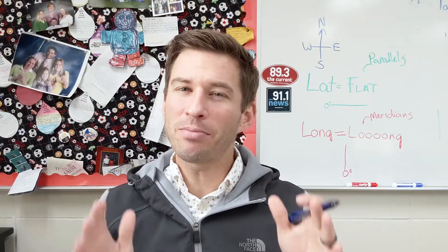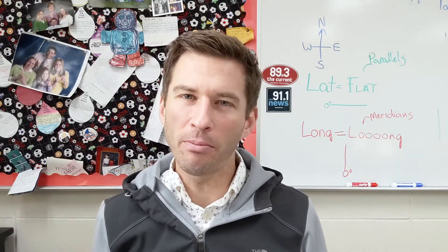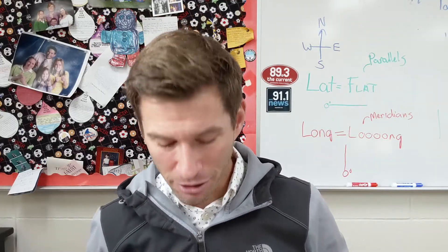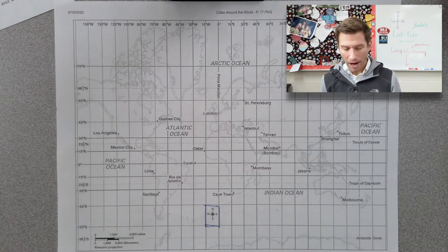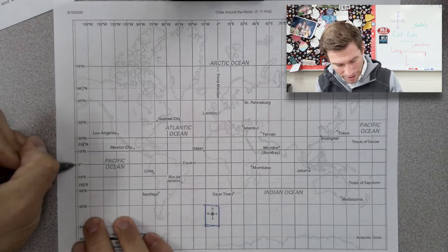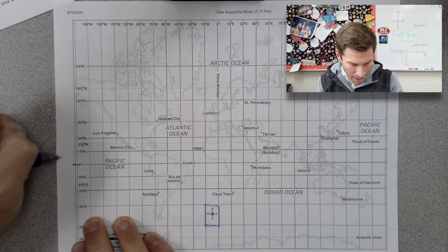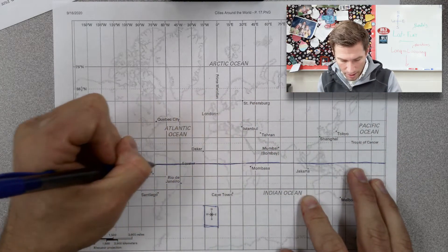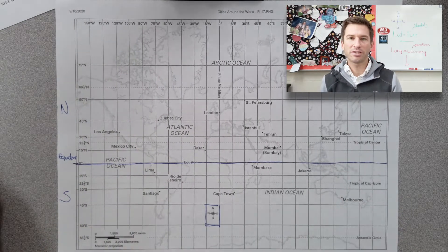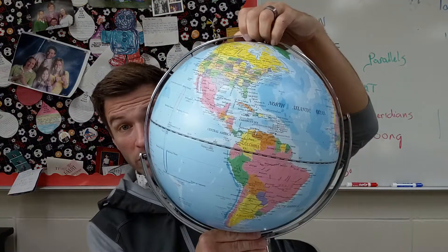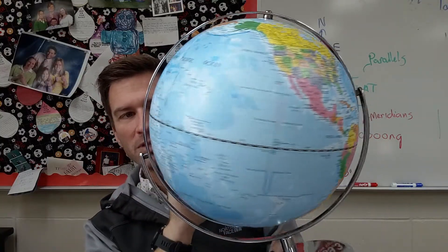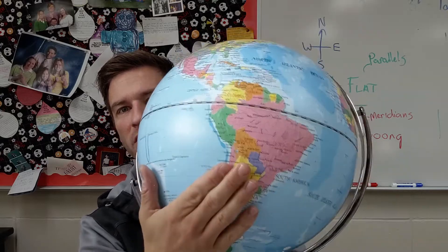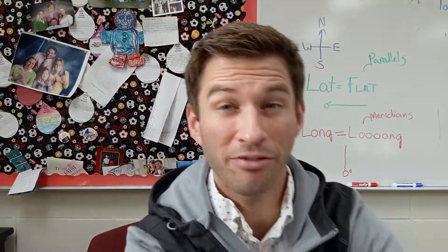Once we're oriented, it's time to identify some of the main lines of latitude and longitude. Let's start with lines of latitude. The most important line — or parallel of latitude — is the one at zero degrees, right here. That line at zero degrees is known as the equator, and it divides the world into the northern and southern hemispheres. On the globe we can see the equator running between the northern and southern hemispheres right at zero degrees.